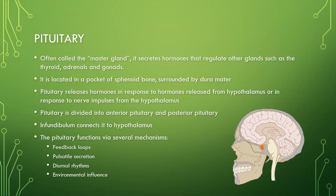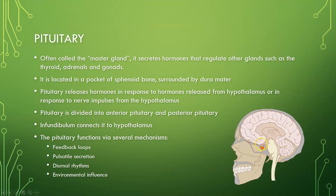The pituitary is often called the master gland. It secretes hormones that regulate other glands such as the thyroid, adrenals, and gonads. It is located in a pocket of the sphenoid bone, surrounded by dura mater — shown here in orange. It releases hormones in response to hormones released from the hypothalamus or in response to nerve impulses from the hypothalamus.